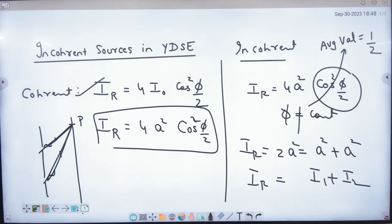Okay? So this is A square plus A square. Do you understand the difference here?